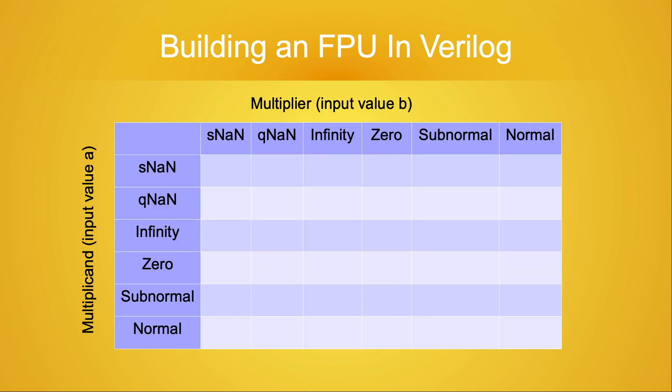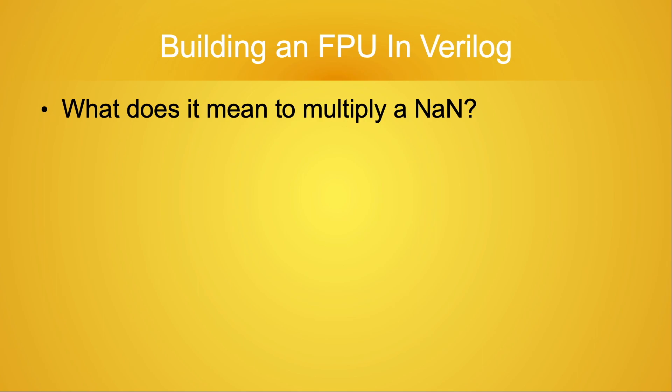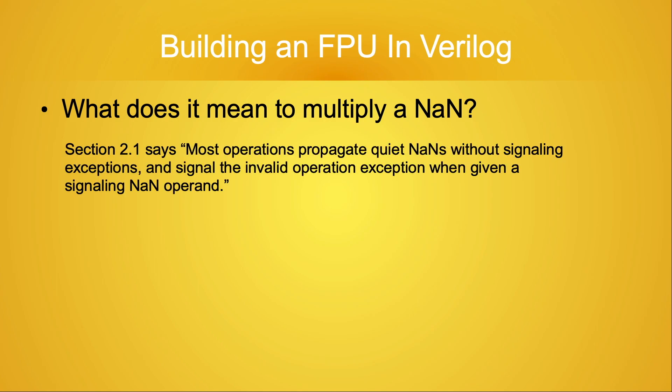This table serves as a checklist of various combinations of the input values A, our multiplicand, and B, our multiplier. Let's begin working our way through the checklist. I've described how to detect NANs, but I haven't discussed how the IEEE standard says they're to be handled when they're encountered by a conforming implementation.